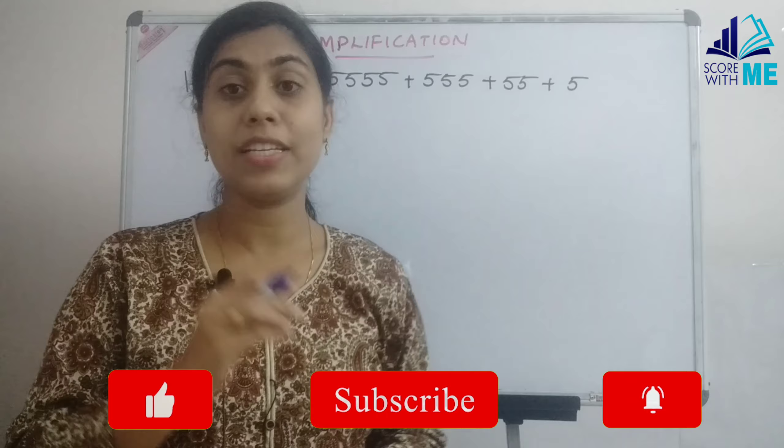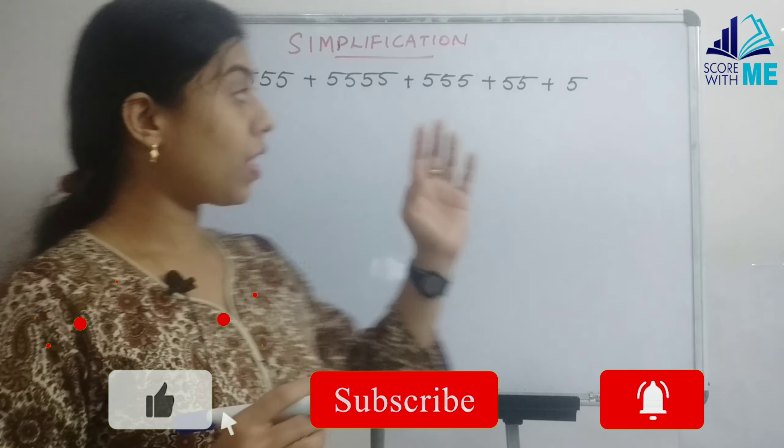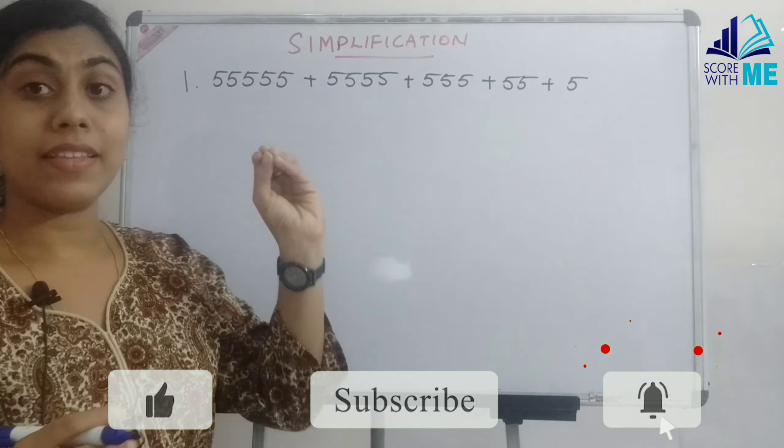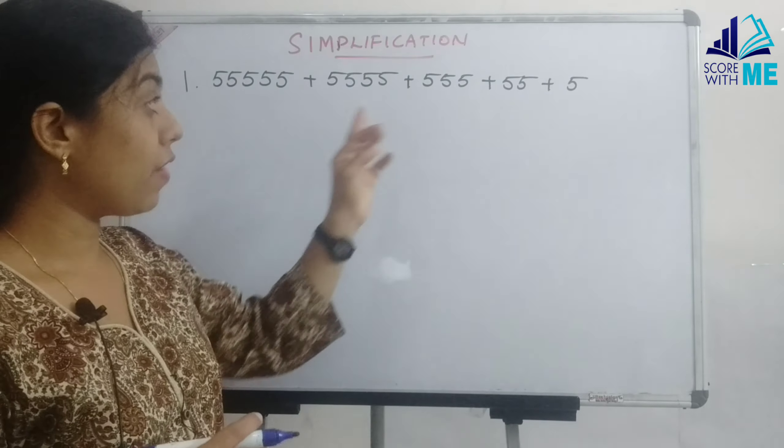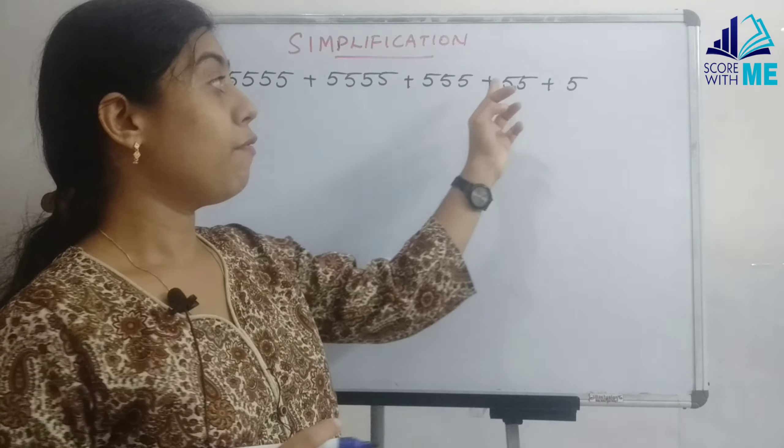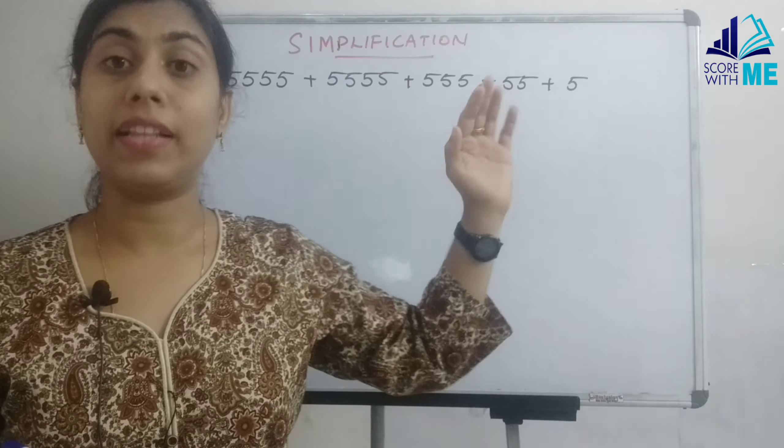Today we have come with a very short and simple trick, a simplification trick on questions which normally appear in SSC CGL exams. Here we have taken a question: 5 times the digit 5 when added to 4 times digit 5, to 555, 55 and 5. We need to find the sum.